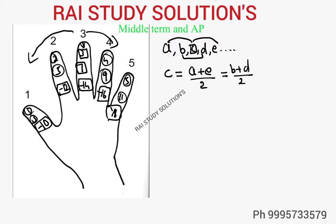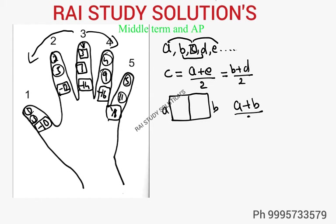To make this more easily understandable, imagine I give you a piece of cloth and tell you to find the middle part. This piece of cloth has two sides, a and b. If you want to find the middle part, you just fold it and take the half of it. So we can write (a + b) / 2, since dividing by 2 means taking the half.